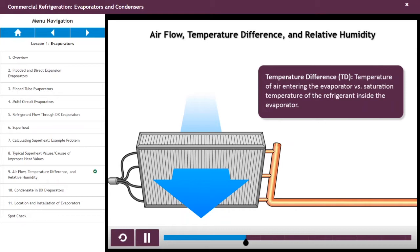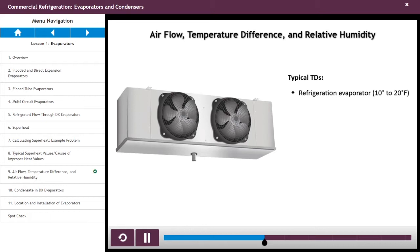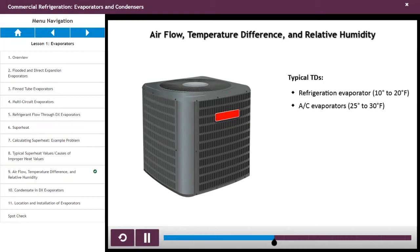The cooling capacity of an evaporator is based on a specific TD. A TD of 10 to 20 degrees Fahrenheit is typical for refrigeration evaporators, while the TD for air conditioning evaporators ranges from 25 to 30 degrees Fahrenheit.